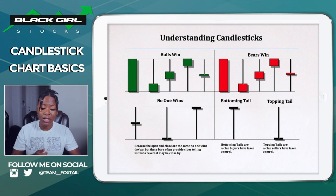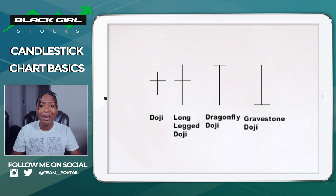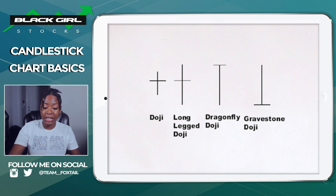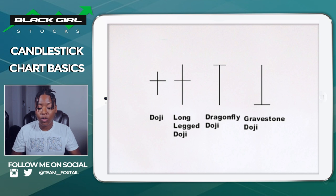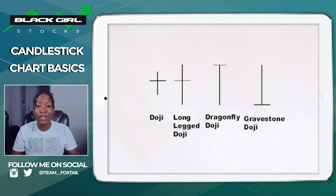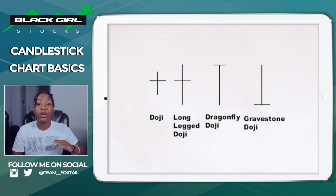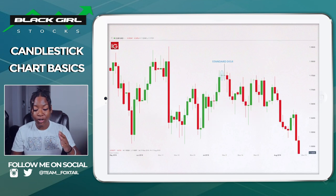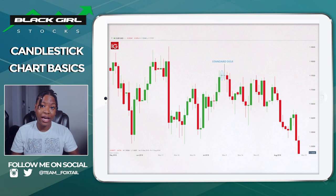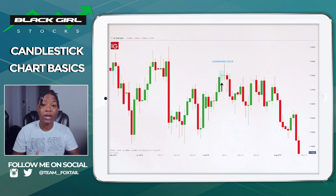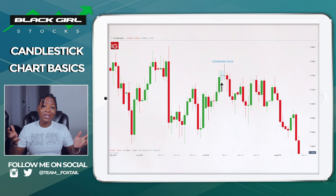Some candles don't have a body at all — it's all wick, all shadows. Those are called dojis. I remember it as 'Doja Cat.' A doji forms when the open and close price were very close, but the stock did reach a high and a low. By itself a doji doesn't signify much, but if you see one in the middle of a trend — say, an uptrend — then that doji can be a sign of a reversal or a trend switch.